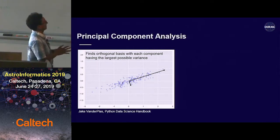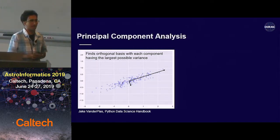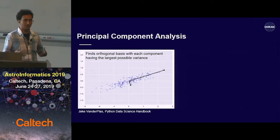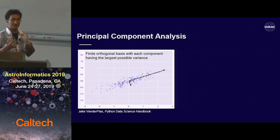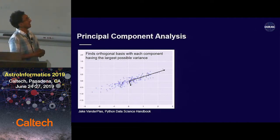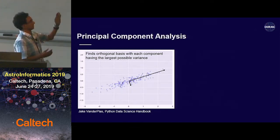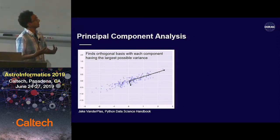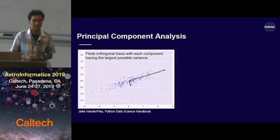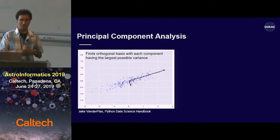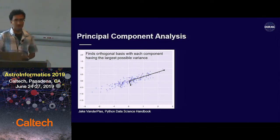On the left I've got a scatter plot of two variables that happen to be correlated. If you do principal component analysis on these two variables, you get a new basis to think about this two-dimensional space. The basis is defined so that the first component — this long arrow going to the right — explains the most possible variance with a single component. Then you fix that first component and ask for the second component that can explain the most possible variance until you span the space.